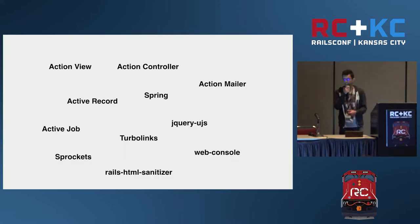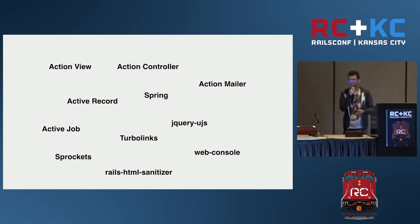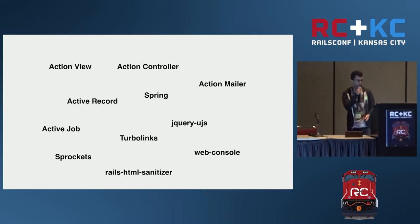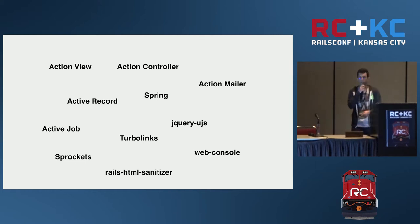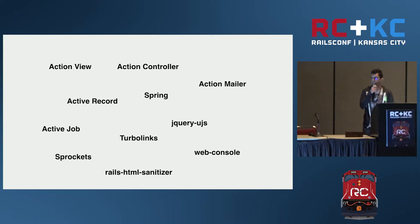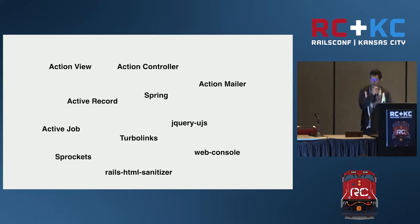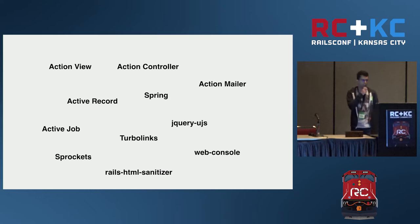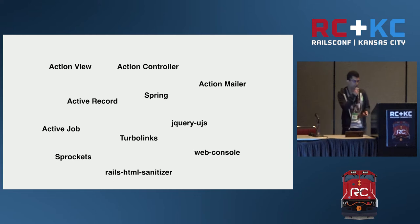Rails is present in a lot of different ways. It's not just the Rails gem, but there are a lot of different components like Action View, Spring, jQuery.js, Turbolinks, and Sprockets. You can see that the Rails project is present in almost all the layers of your stack — things at the process level like Spring, and also things running in the browser like jQuery.js and Turbolinks.